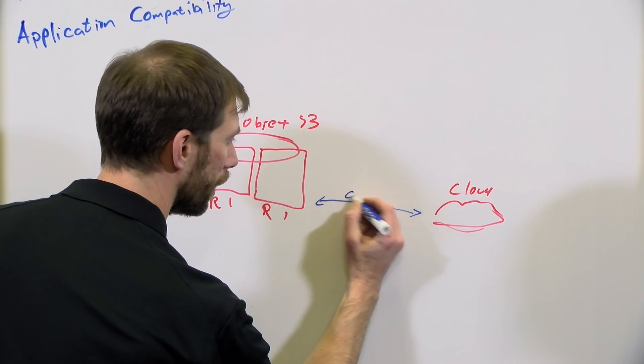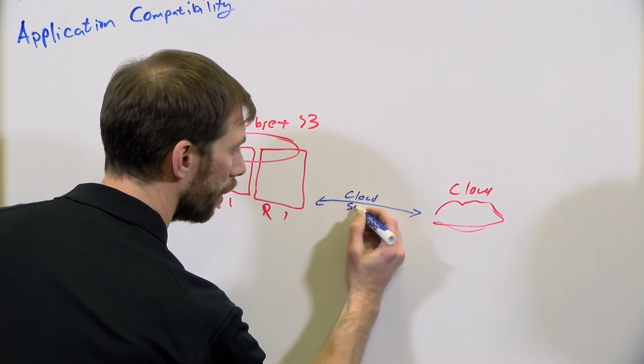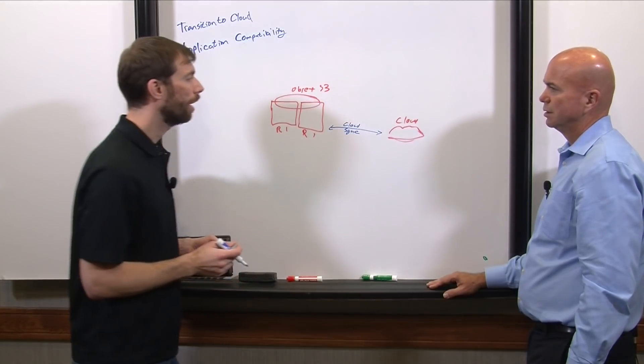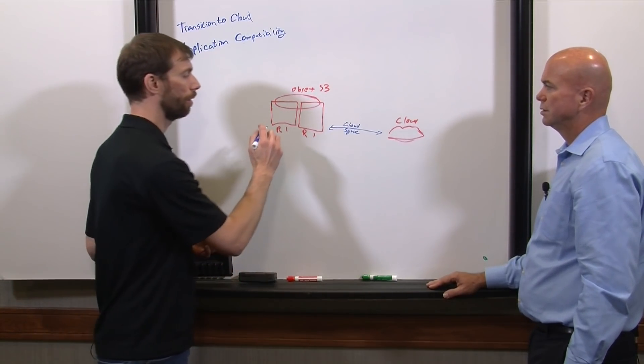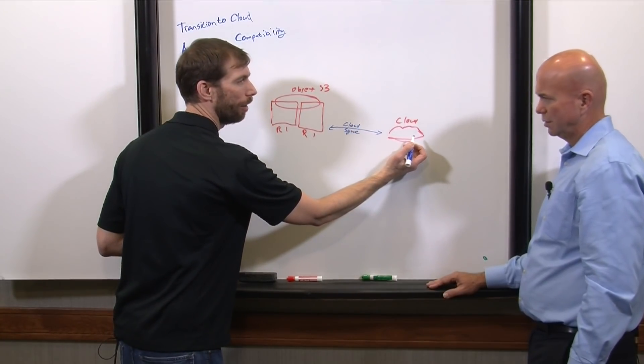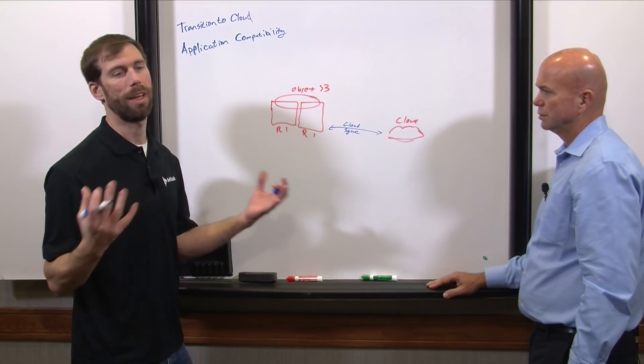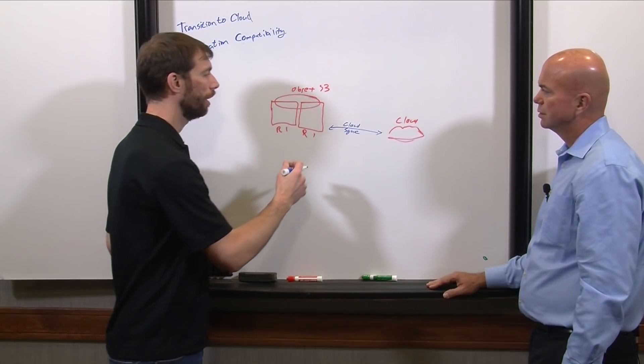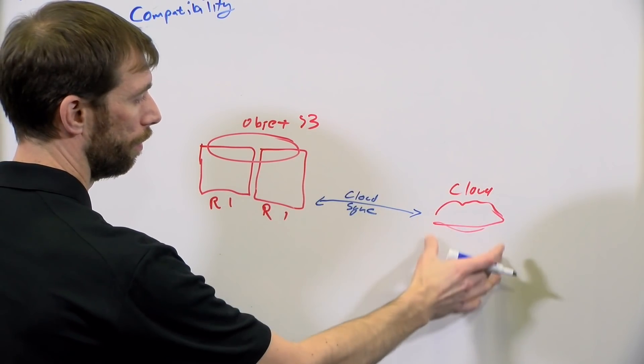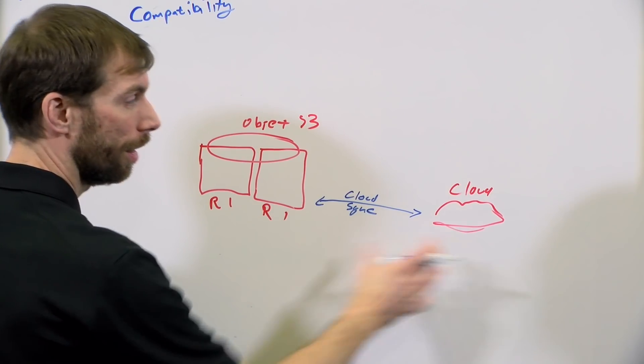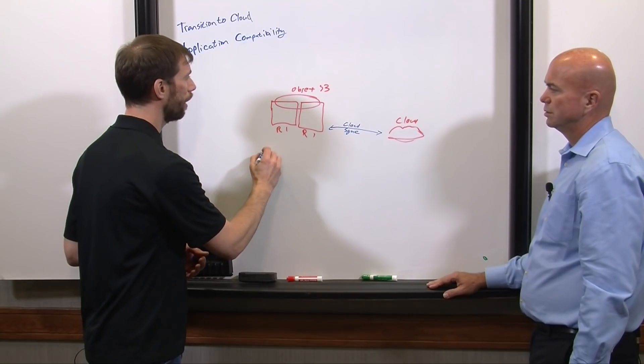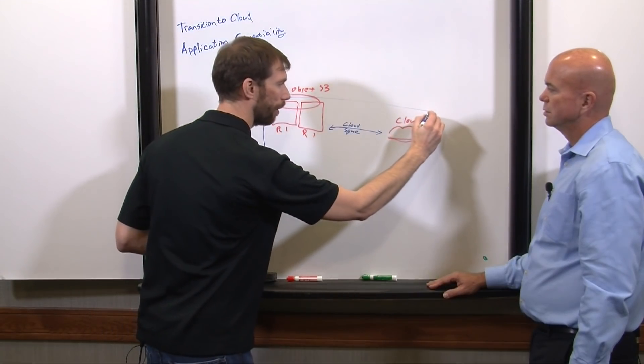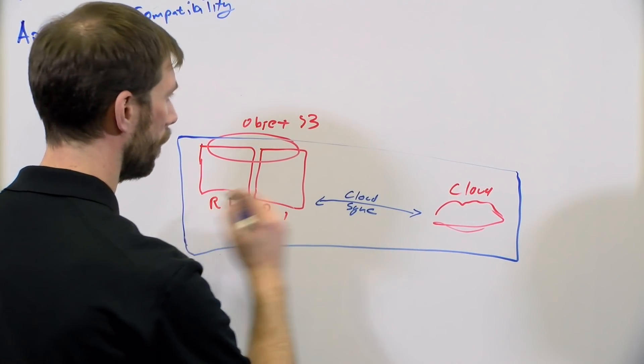So we have a technology called CloudSync. And what it does is you can create different policies to either replicate data to the public cloud and you can use that for disaster recovery, things like that. Or you can do archiving and it can tier the data off.